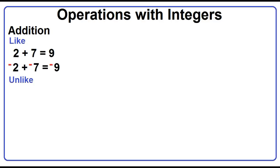What if the two numbers have different signs? Negative 2 plus 7 is equal to 5. What if 2 is positive and 7 is negative? 2 plus negative 7 equals negative 5.